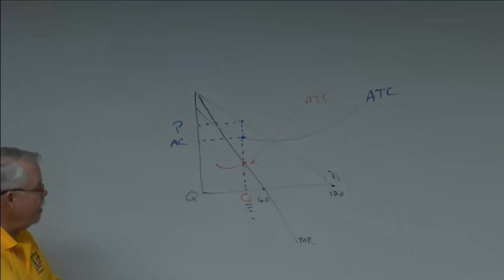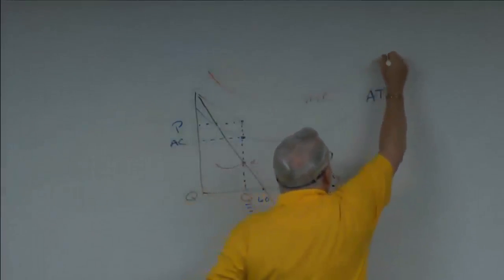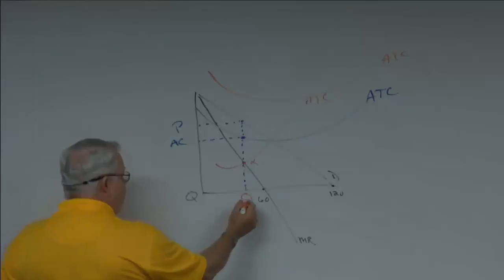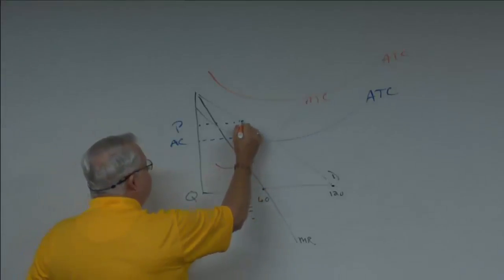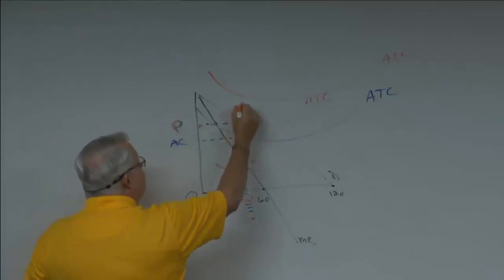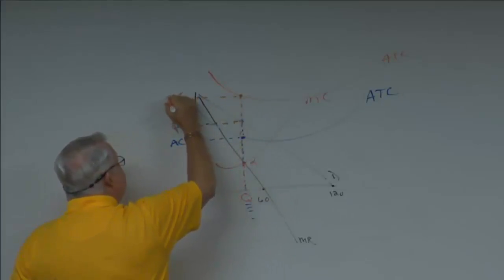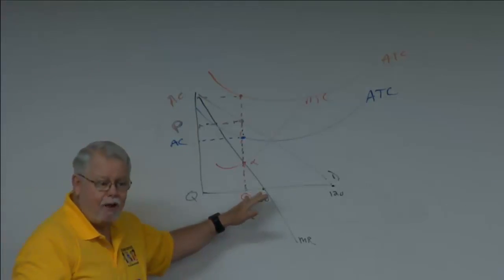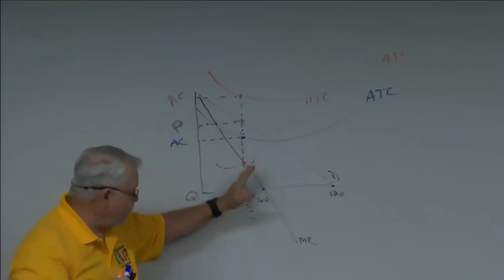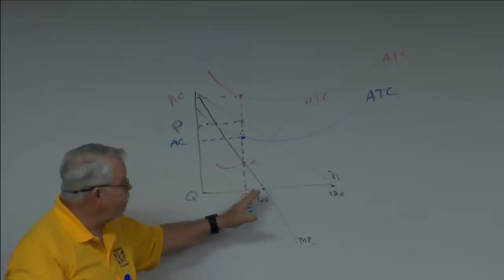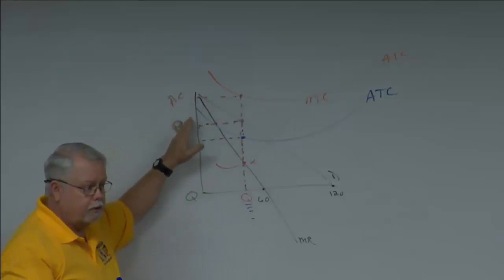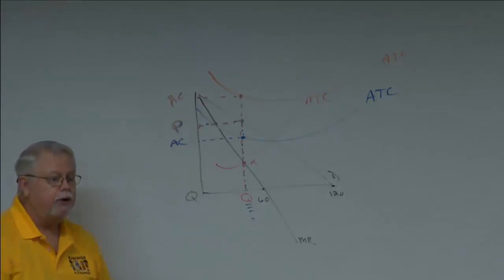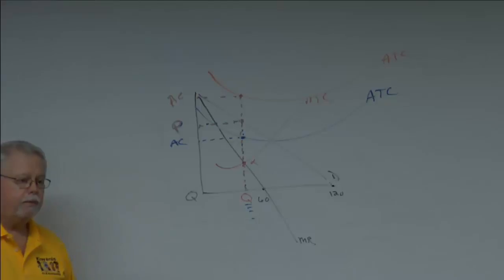Alternatively, my average cost curve might be way up here. That means at my magic quantity from alpha, I read up and see the price I'll get — but it cost me too much; that's my average cost and I'm going to lose money. But I'm still starting from the same alpha. Step one: find alpha and the quantity. Step two: compare price to average cost. That's what we will do repeatedly.